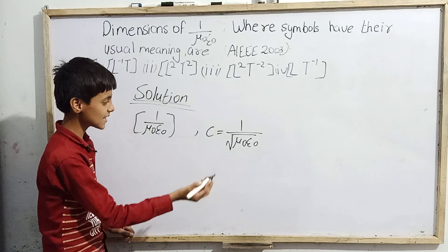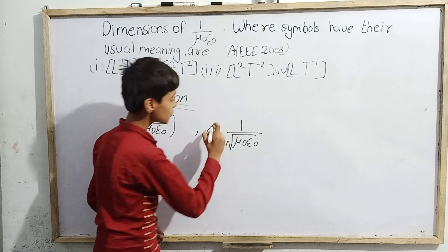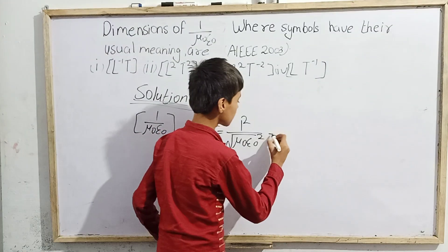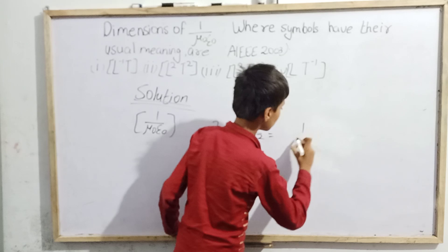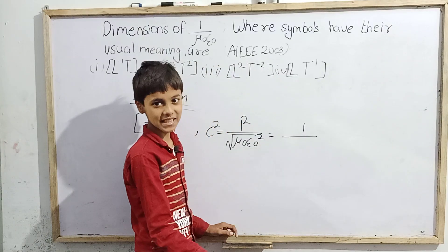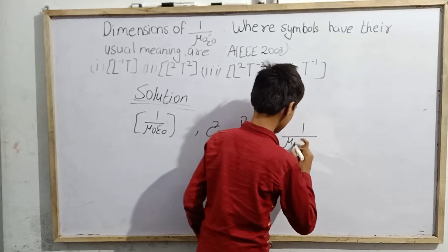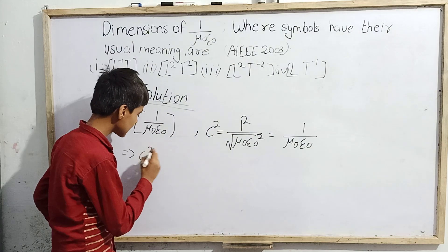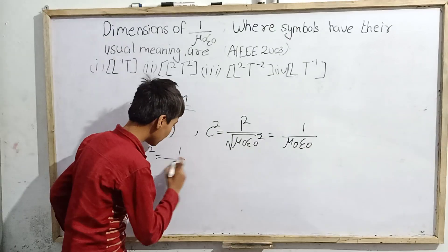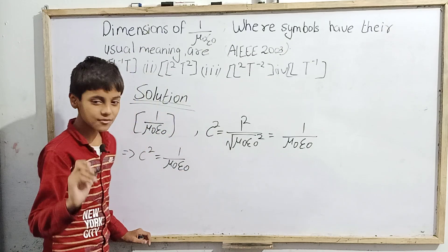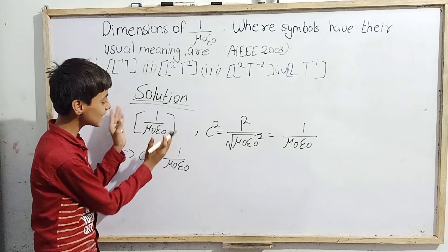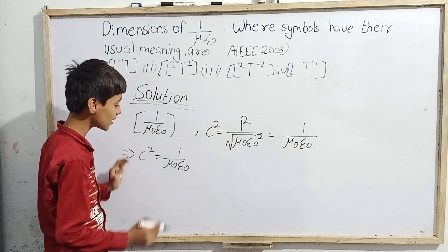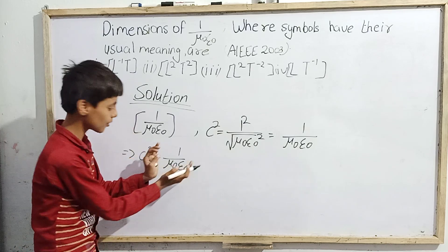Since we have c = 1/√(μ₀ε₀), if we square both sides, c² = 1/(μ₀ε₀). The square and square root cancel each other on the right side, giving us c² = 1/(μ₀ε₀). So we need to find the dimensions of c², and we can substitute that for 1/(μ₀ε₀).